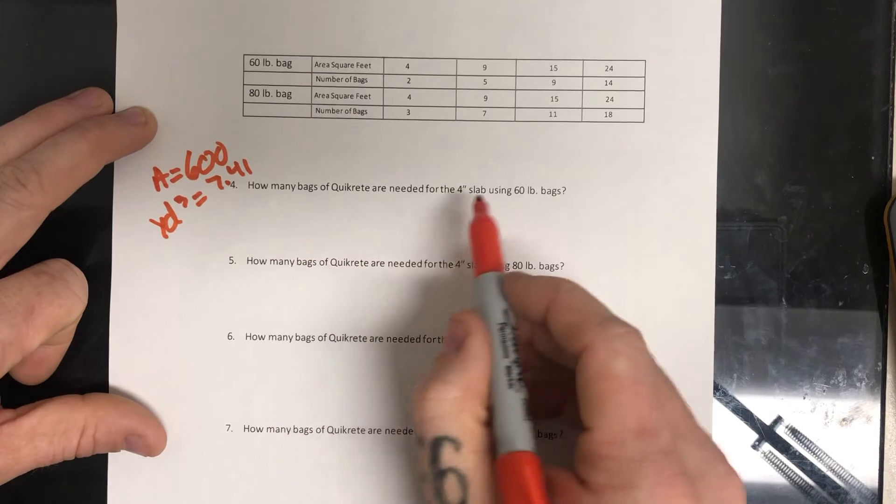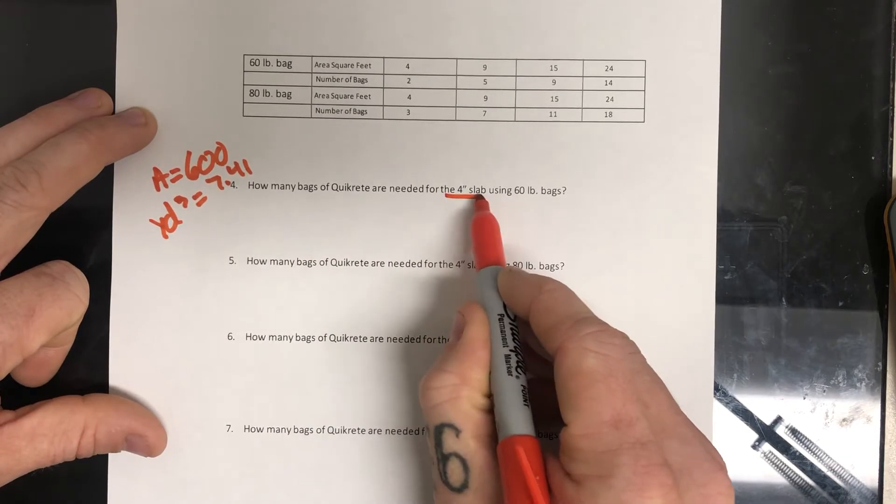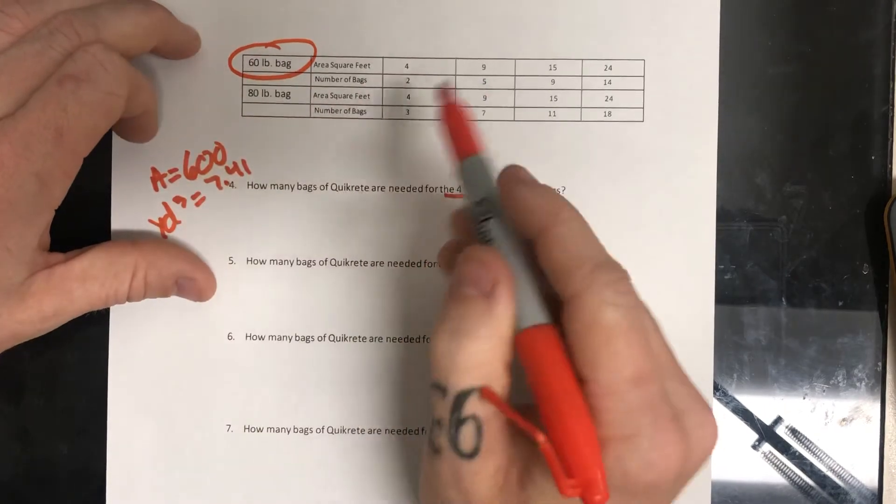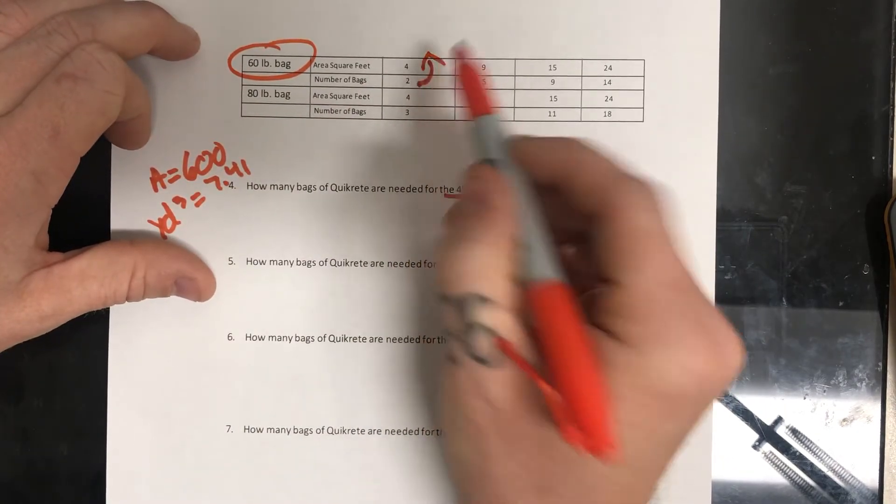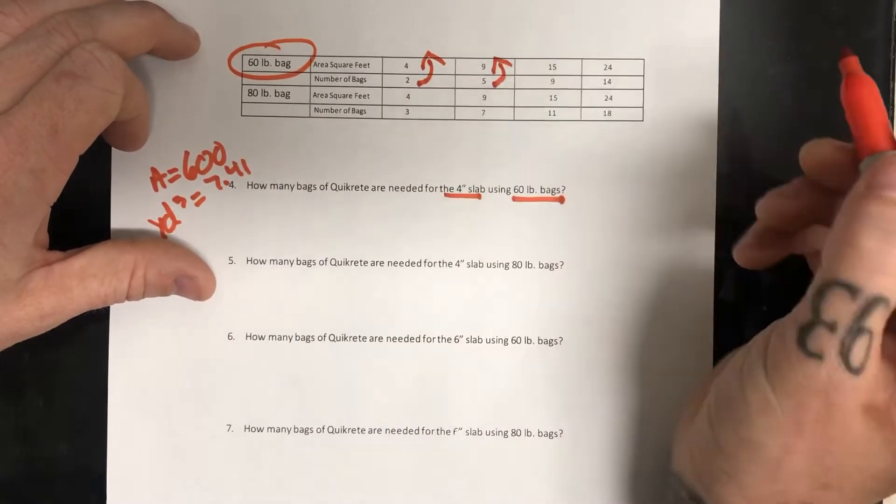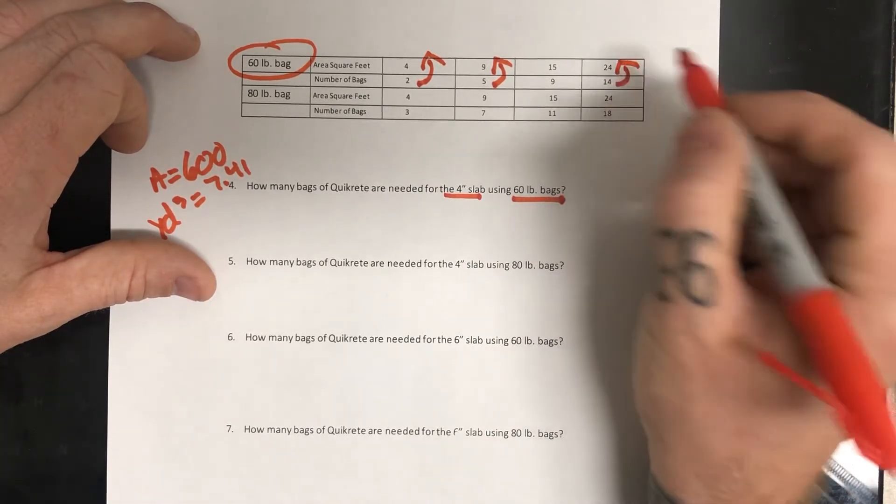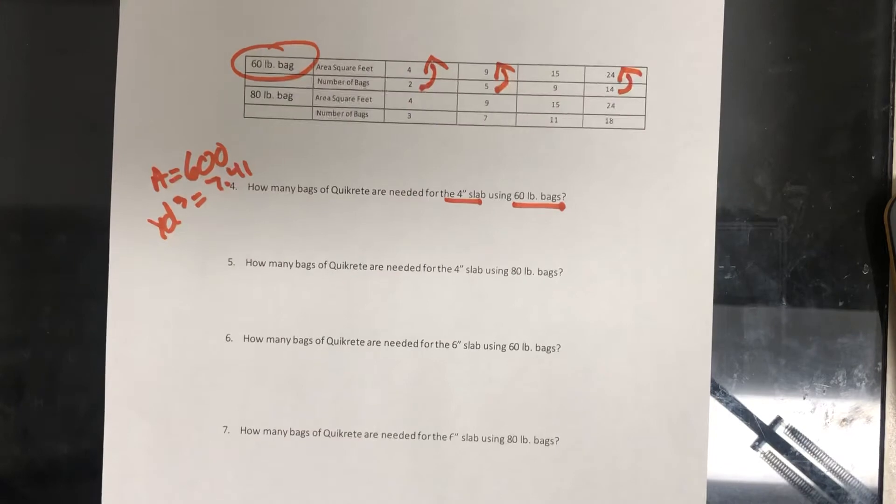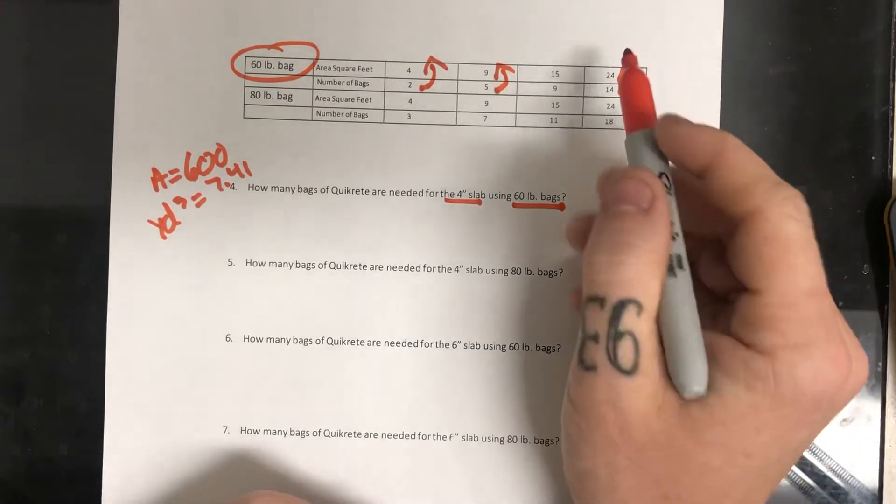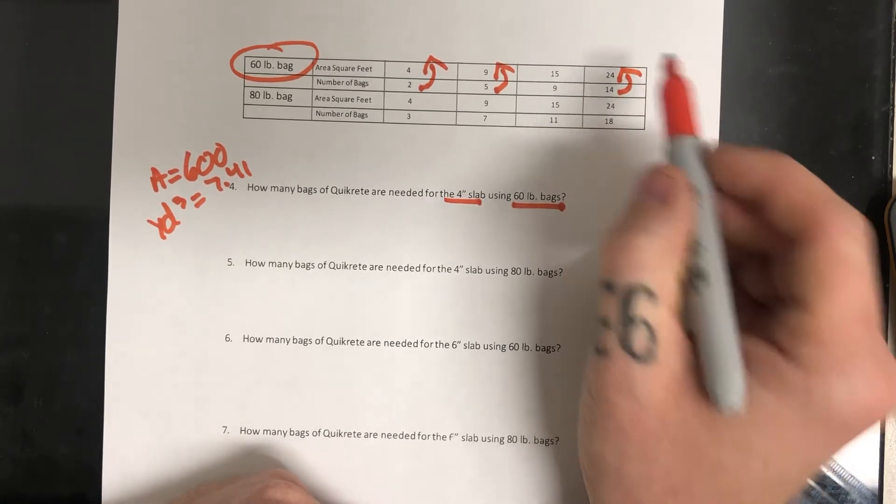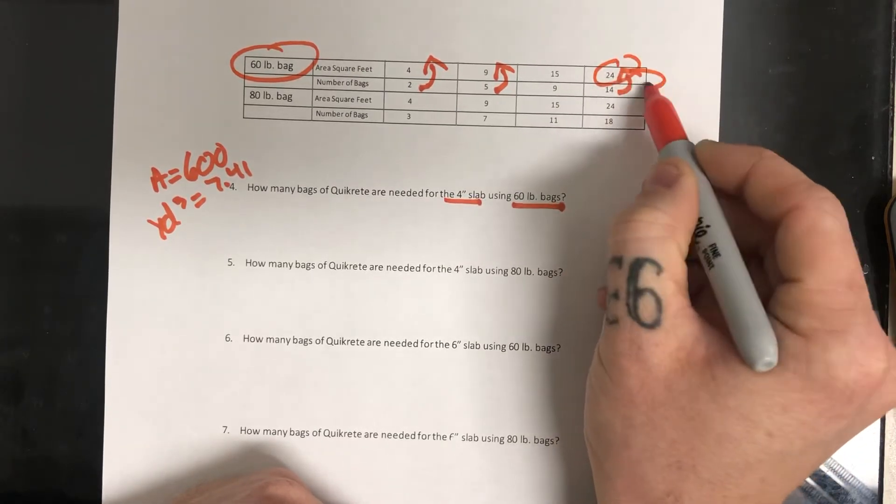So how many bags of quick creed are going to be needed for the four inch slab using 60 pound bags? So here's 60 pound bags. Two bags gives us four feet. Five bags gives us nine feet and so on. 14 bags gives us 24 feet.